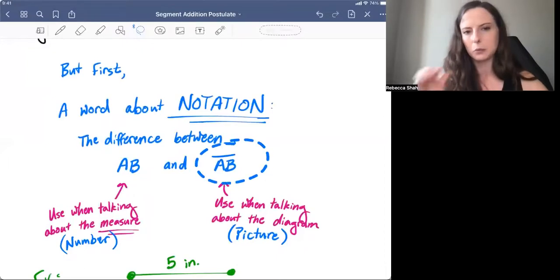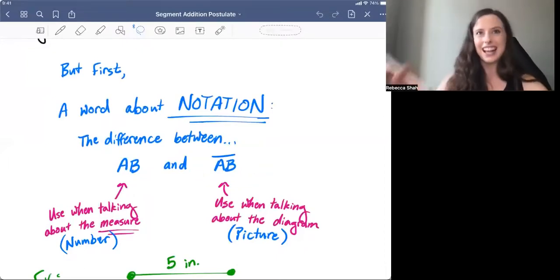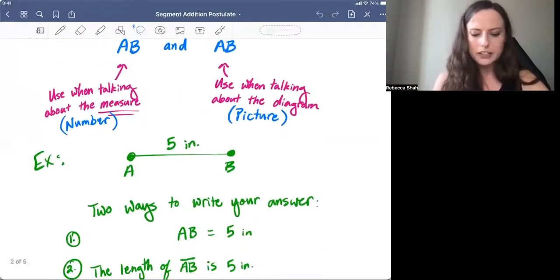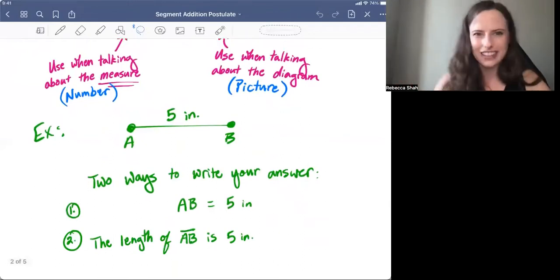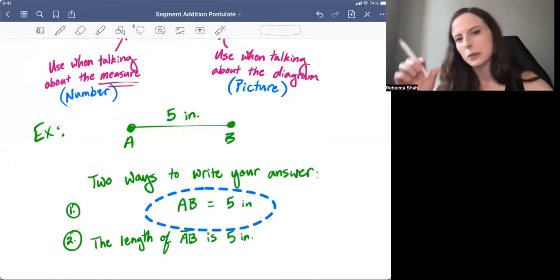Versus when you see AB with the bar, you're talking about the geometrical objects, like the actual segment that you see in a diagram or a picture. So when you're writing your answers, talking about the lengths of segments, make sure that if you want to talk about the number, that you write the letters without the bar.